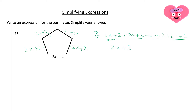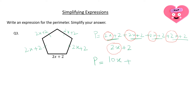Now let's simplify the like terms: 2x plus 2x plus 2x plus 2x plus 2x are like terms, so it is 10x. Plus let's add the constant numbers: 2 plus 2 plus 2 plus 2 plus 2 equals 10. This is the expression for the perimeter of the pentagon.